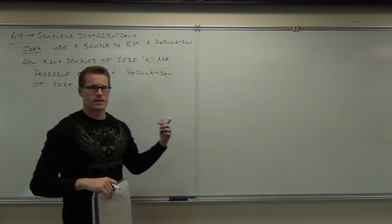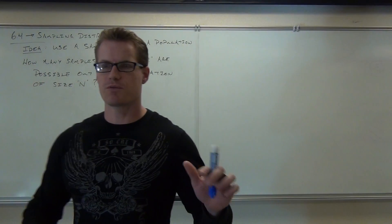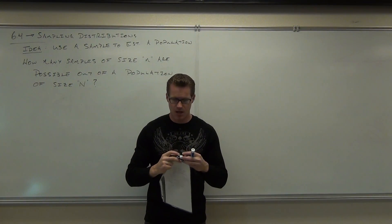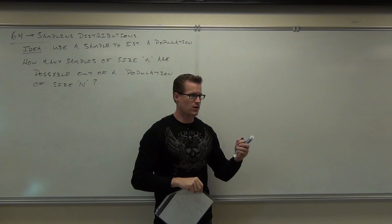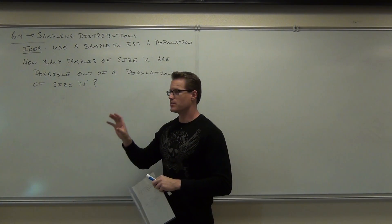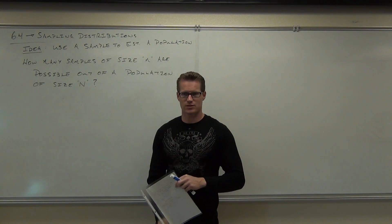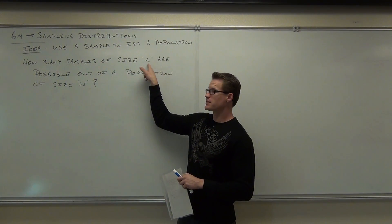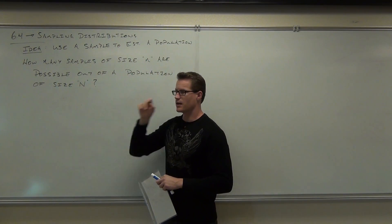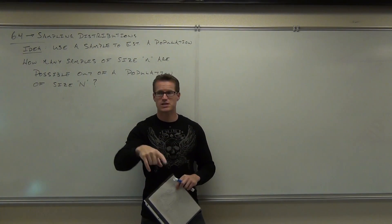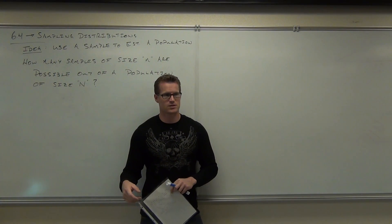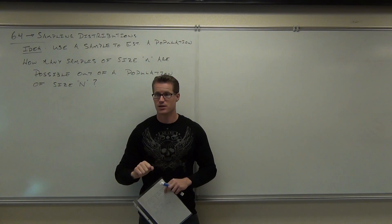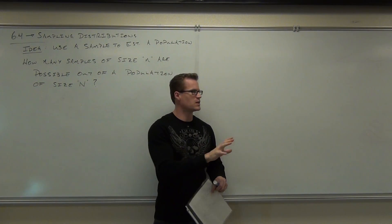Notice I used lower case letter n for a sample and upper case letter N for a population — hopefully you remember that from the first couple days of class. How many samples of size n are there possible out of a population of size N? For us: there are 27 people in the class and I'm picking samples of size 5. Shall we count them? Otherwise, you need a better way to do it.